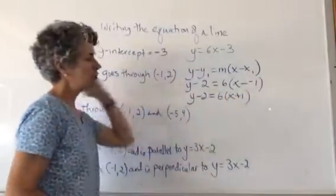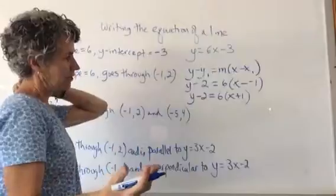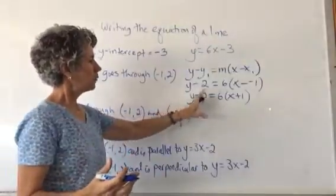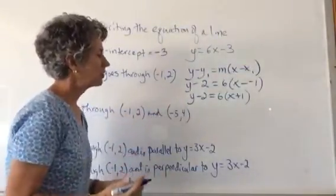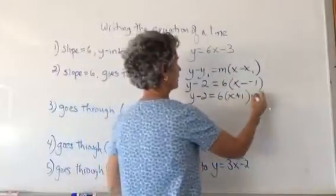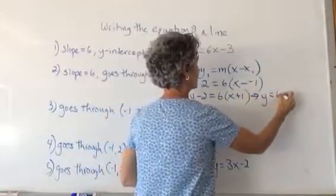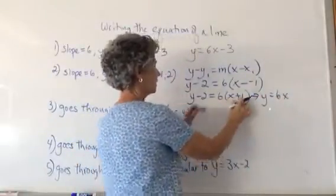You can leave it in point-slope form, or you could multiply that out and get y on one side and everything else on the other if you wanted to. That would give us y equals 6x plus 6 plus 8.